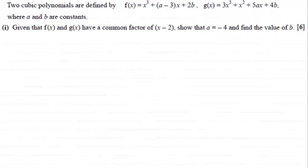Hi there. Now in this question, we're given that two cubic polynomials are defined by f(x) equals x cubed plus (a-3) times x plus 2b, and g(x) equals 3x cubed plus x squared plus 5ax plus 4b, where a and b are constants.